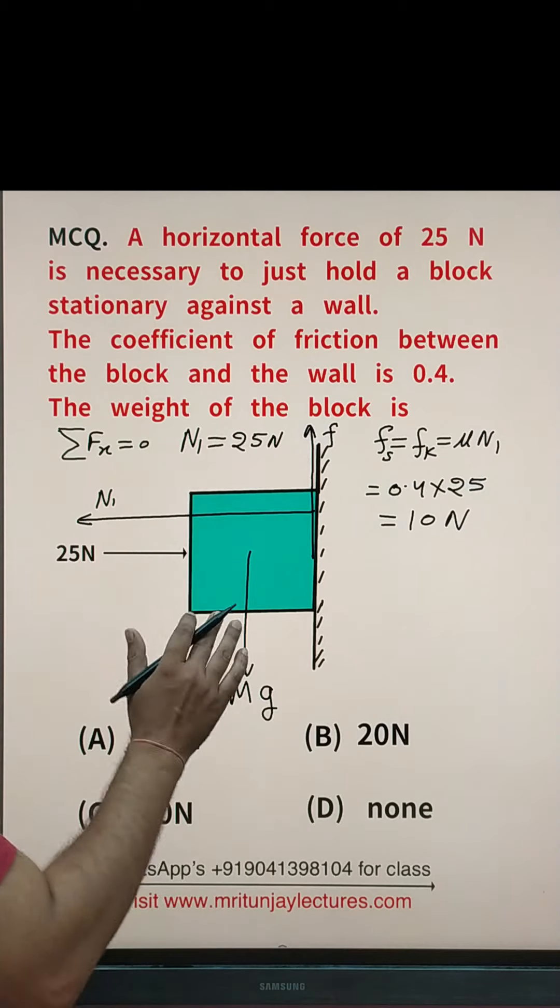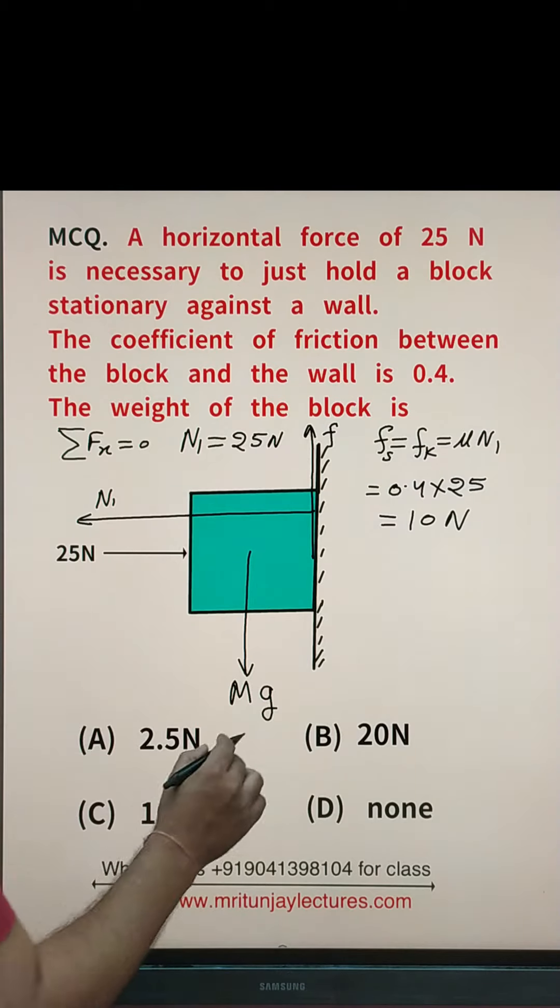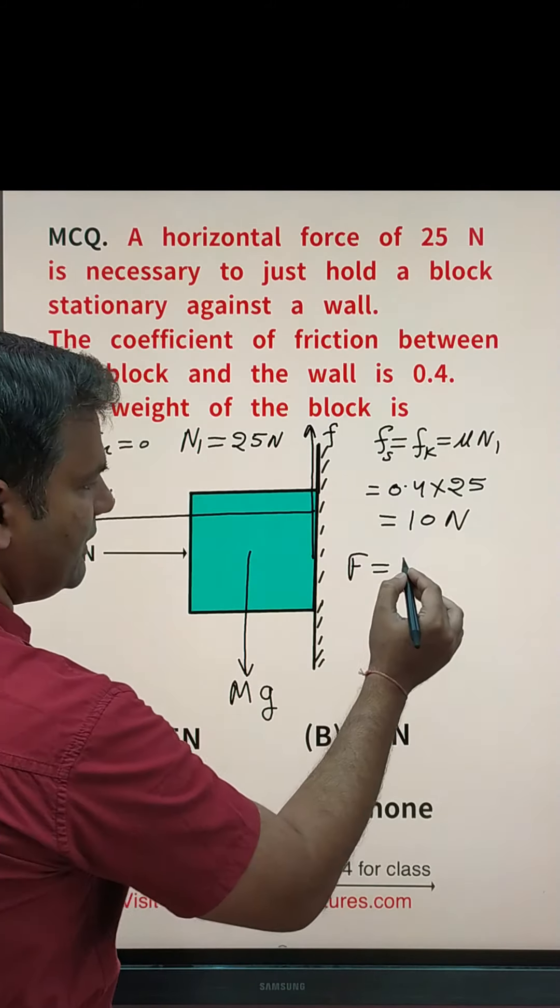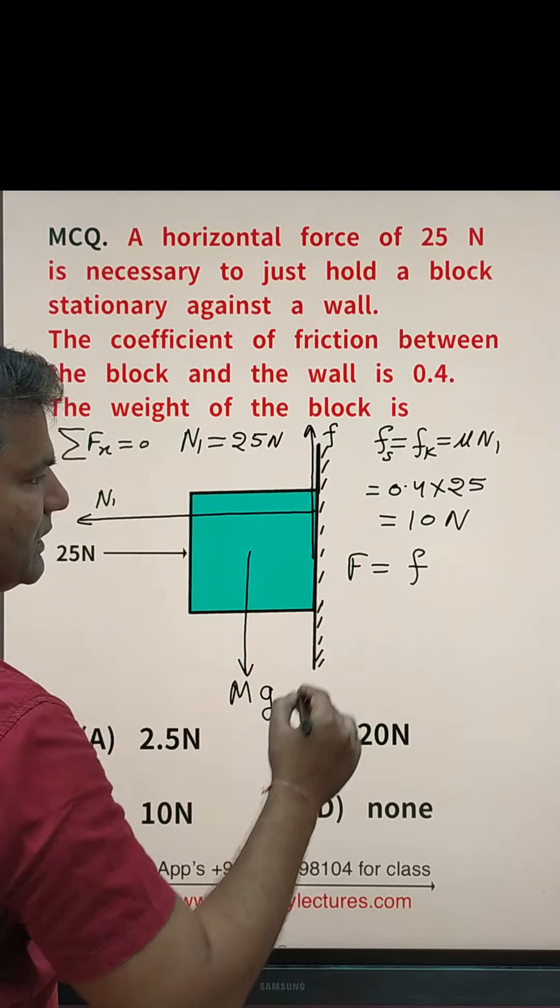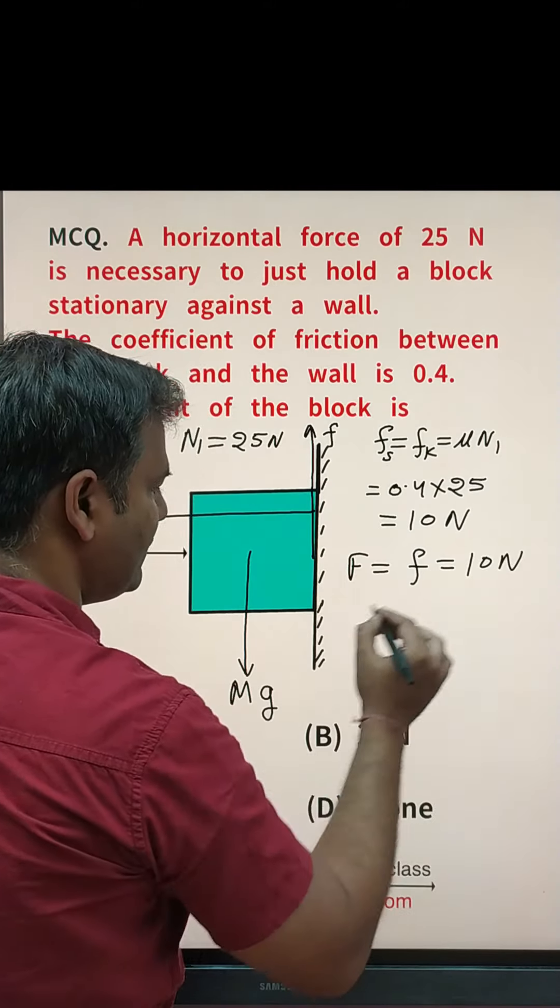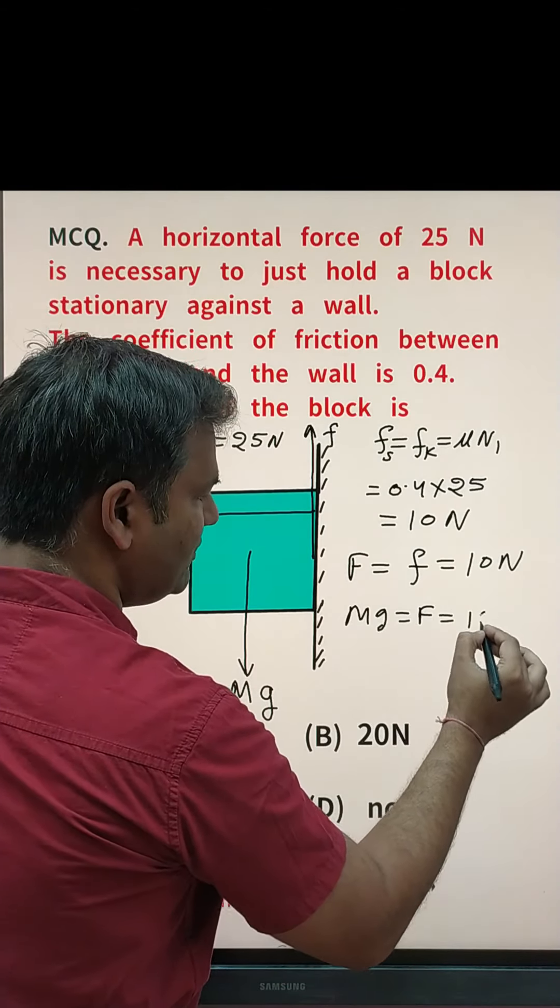If according to question, this block is not moving, it means applied force must equal frictional force. So, how much? 10 N and applied force is Mg. So, Mg equals F. F equals 10 N.